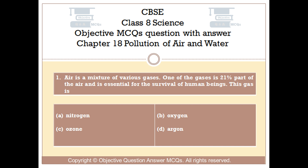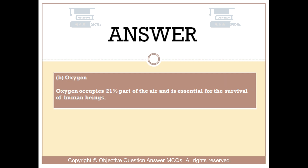Option A: Nitrogen. Option B: Oxygen. Option C: Ozone. Option D: Argon. The right answer is Option B — Oxygen. Oxygen occupies 21% part of the air, and is essential for the survival of human beings.